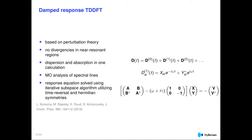An additional benefit of using damped response theory is that we can also calculate scattering properties like polarizabilities and pass through poles — the points where the response function would diverge at resonance — allowing us to generate a full frequency spectrum of the polarizability.